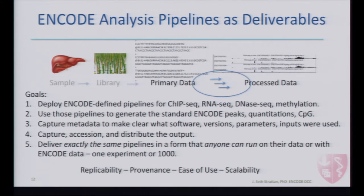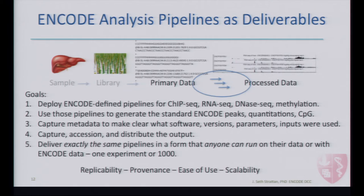Here's the key, and this is why we're here and why we have this workshop today: we could have done all that and it could have been a black box to you, but we didn't want it to be that way. We want to deliver exactly the same pipelines in a form that absolutely anyone can run either on their own data or against ENCODE data in a scalable way — whether you have one experiment or thousands. These goals can be summed up by the words at the bottom: we want the pipelines to be replicable, we want the provenance of the files and software used to be transparent, we want them to be relatively easy to use, and we want them to be scalable.